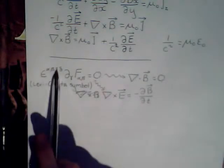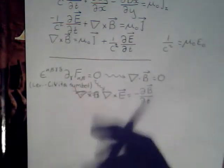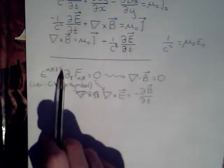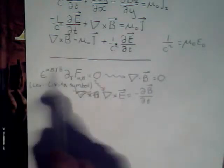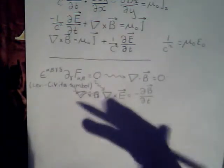Alpha, beta, gamma are summation indices. Whereas, lower delta here can run from zero to three. So, because it can run from zero to three, we get four separate equations from them.